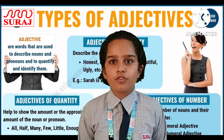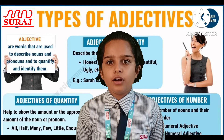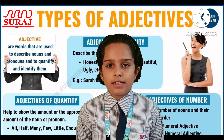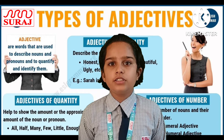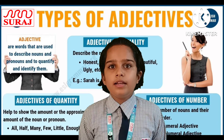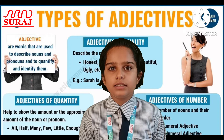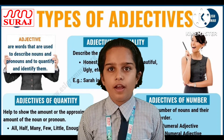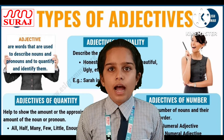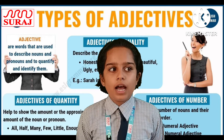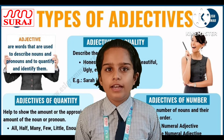First, adjective of quality. They describe the quality of the person, animal, or thing referred to. Example: Delhi is a large city — 'large' is the adjective of quality. Second example: the dog is a faithful animal — 'faithful' is the adjective of quality.